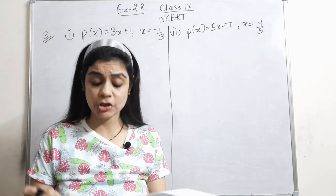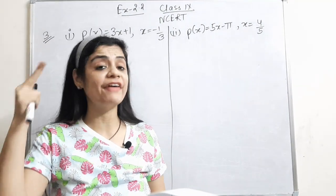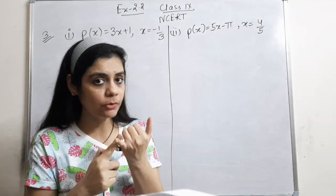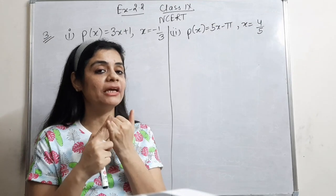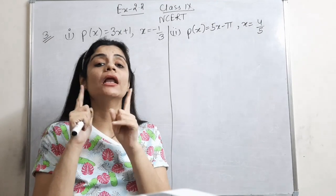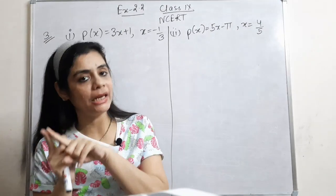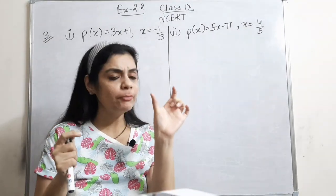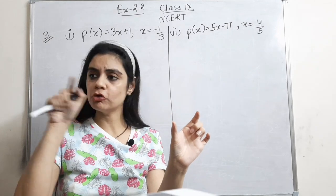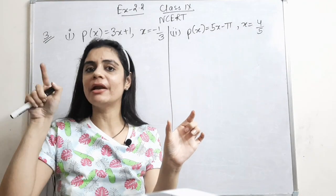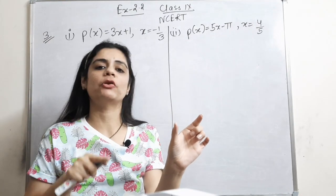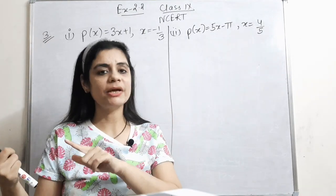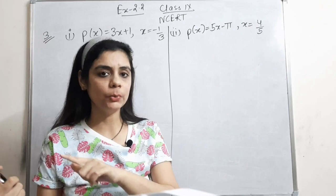Now the next question says 'find the zero of the polynomial.' When such a question comes, as I showed in the example, if we have to find the zero, we set the entire polynomial equal to 0 and solve for x. I'll explain that type too. But first let's do the verify type.